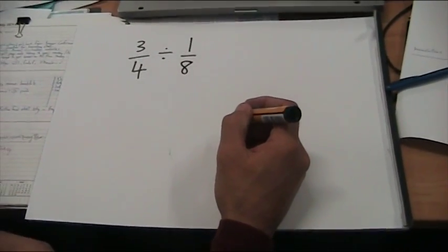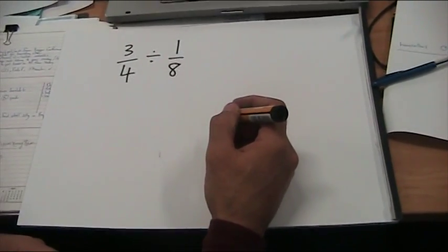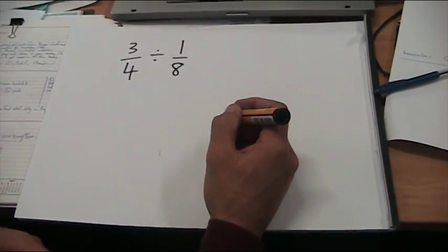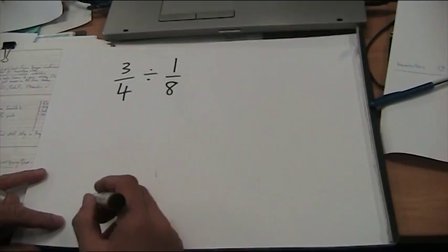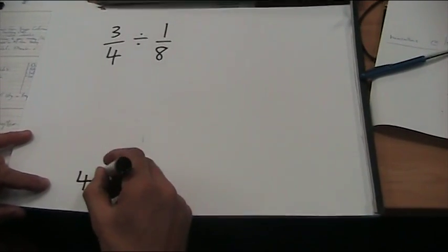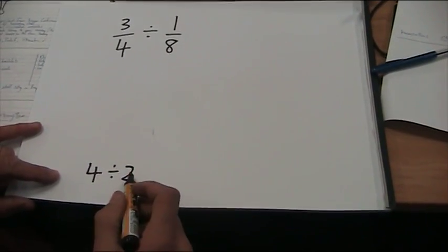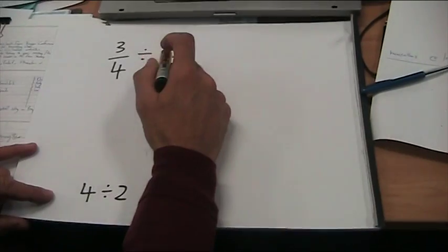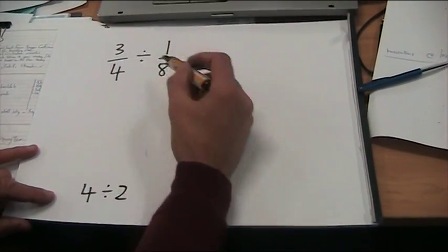Okay, so division of fractions. We want to divide 3 quarters by 1 eighth. And it's like saying anything, if I just go down here, if I went 4 divided by 2, it's saying how many 2's can you fit into 4. Up here it's saying how many eighths can I fit into 3 quarters.